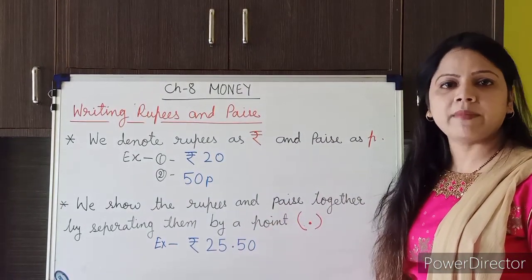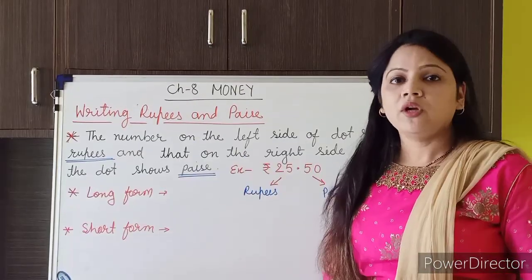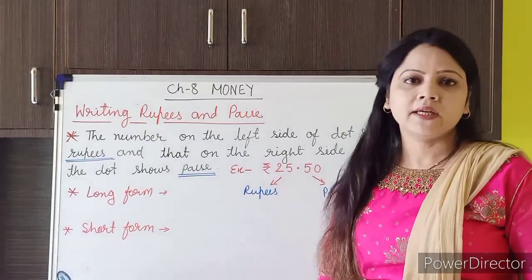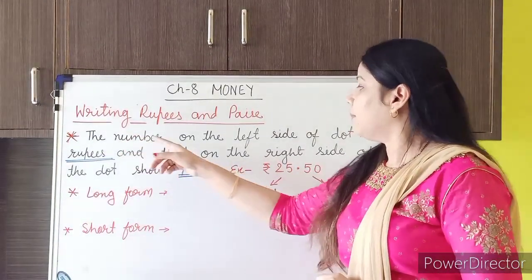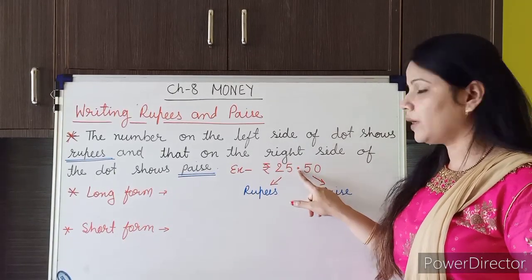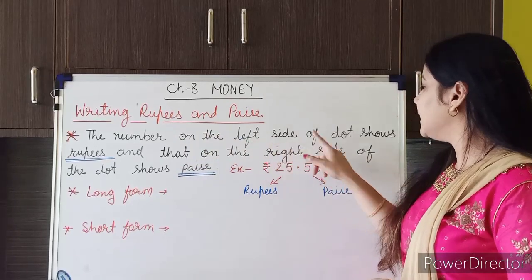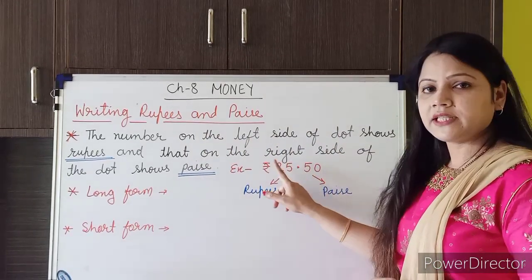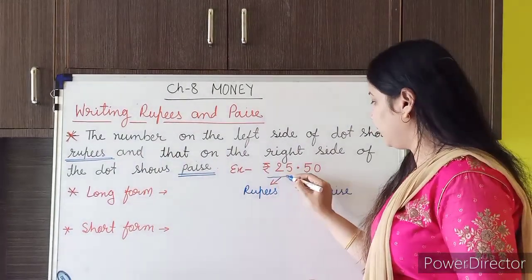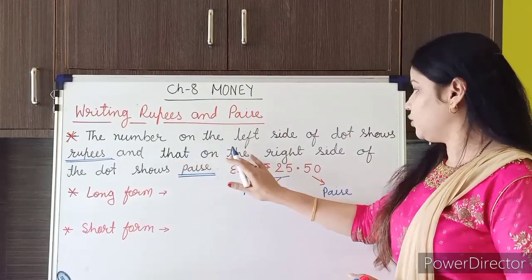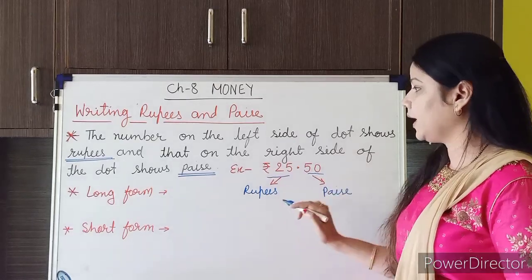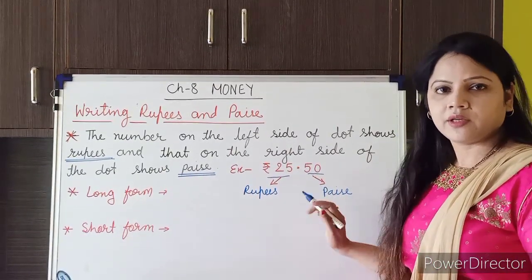Just pause this video and write these things in your maths notebook. The third important fact is: the number on the left side of the dot shows rupees, and the number on the right side of the dot shows paise.